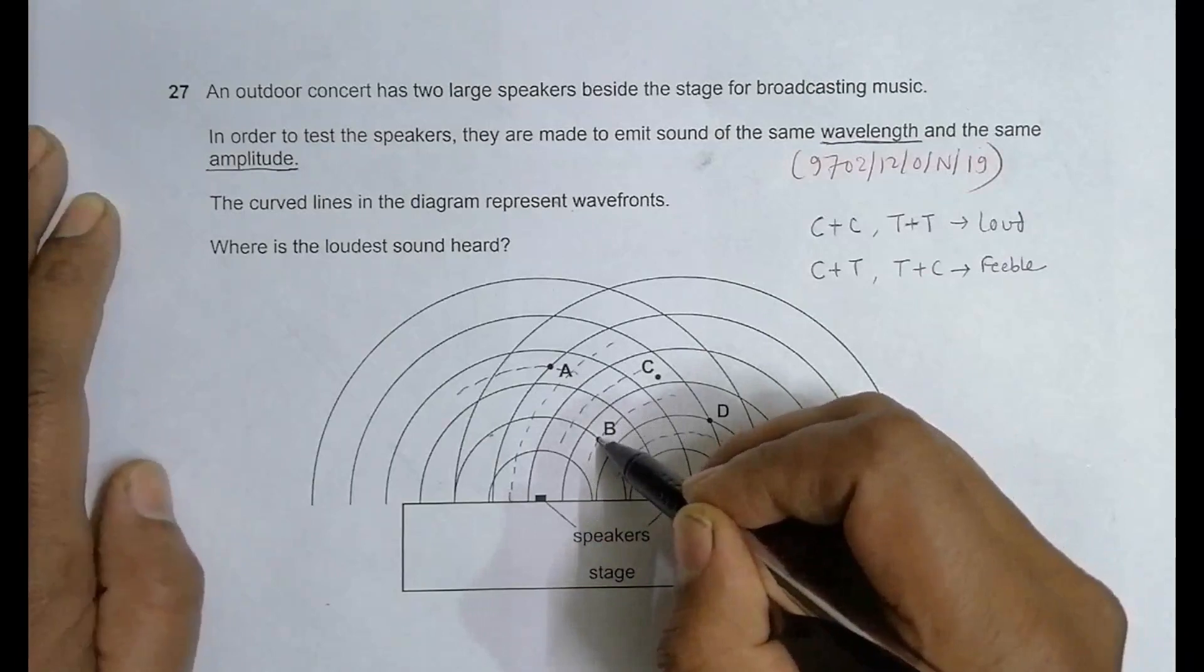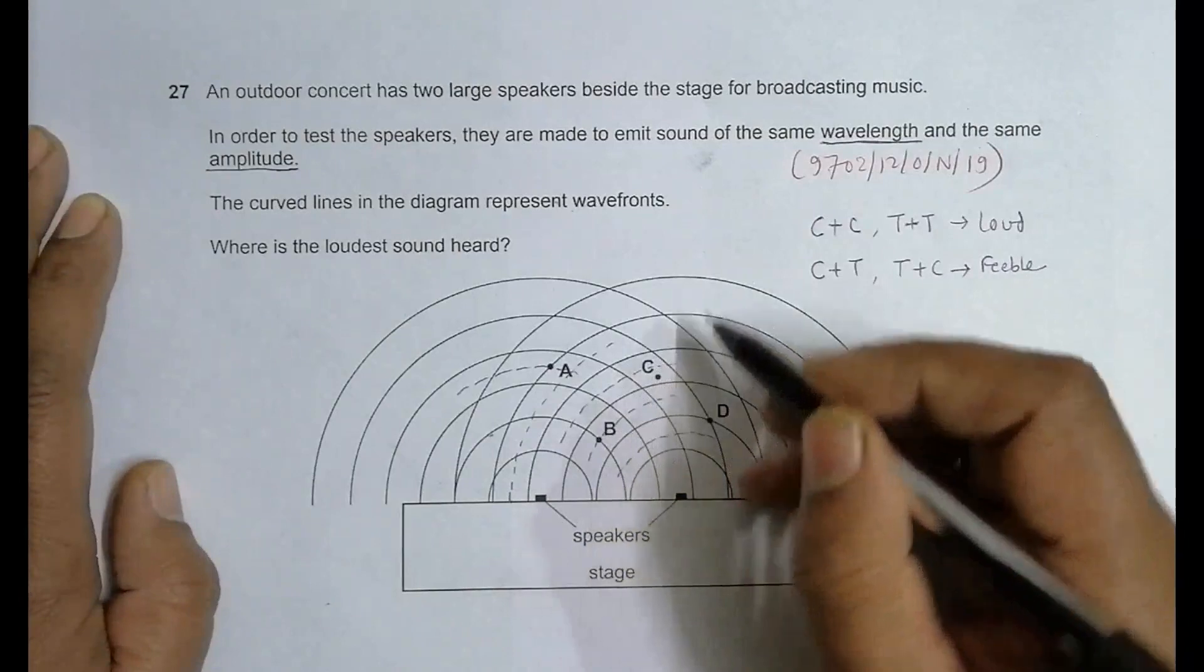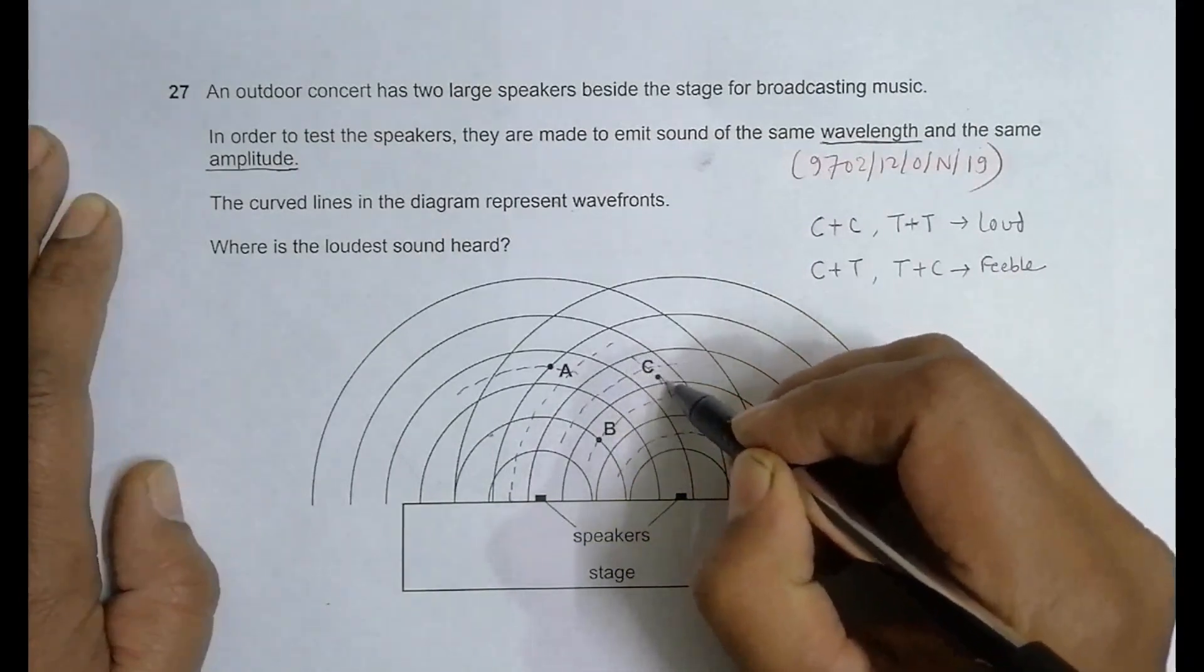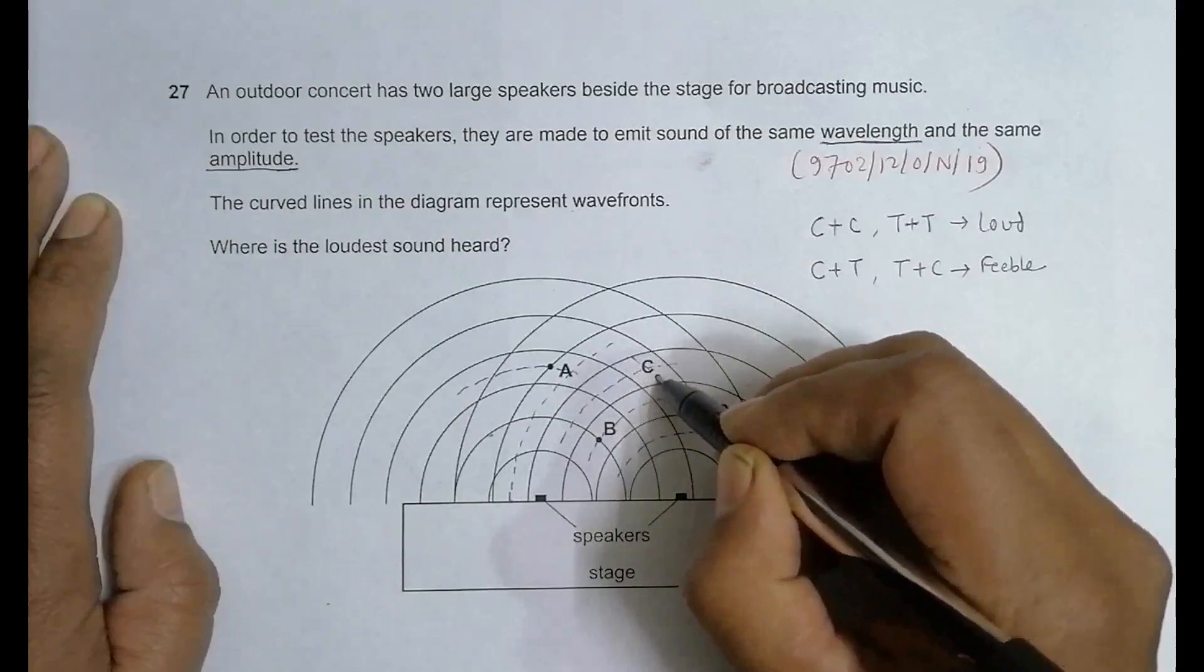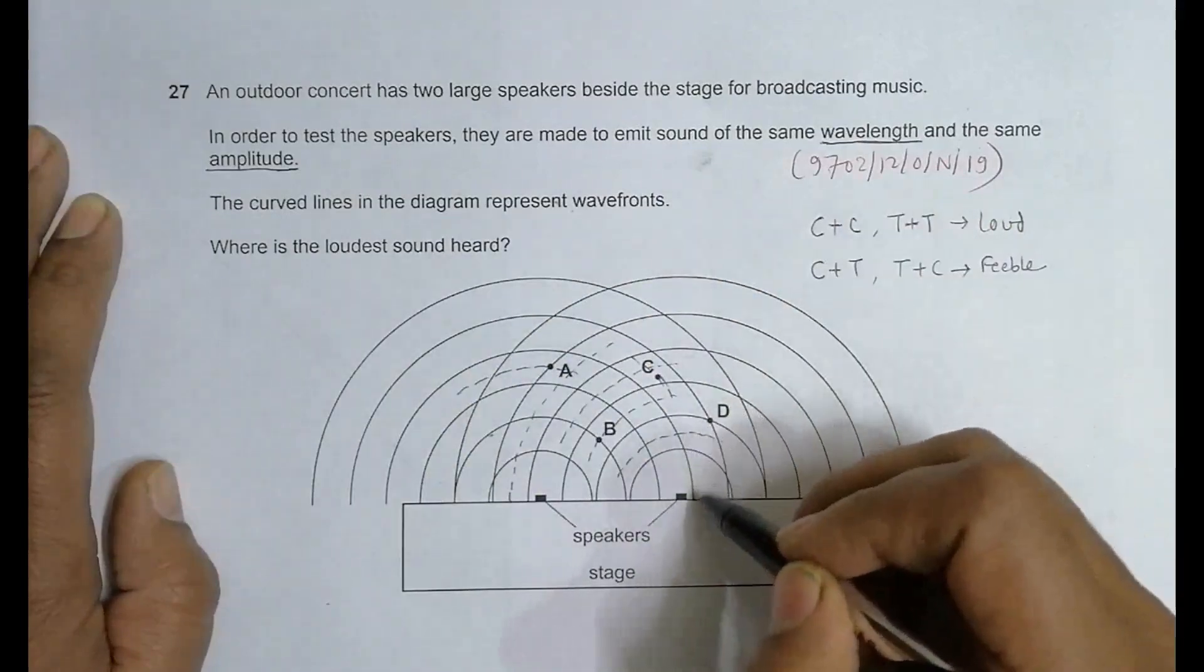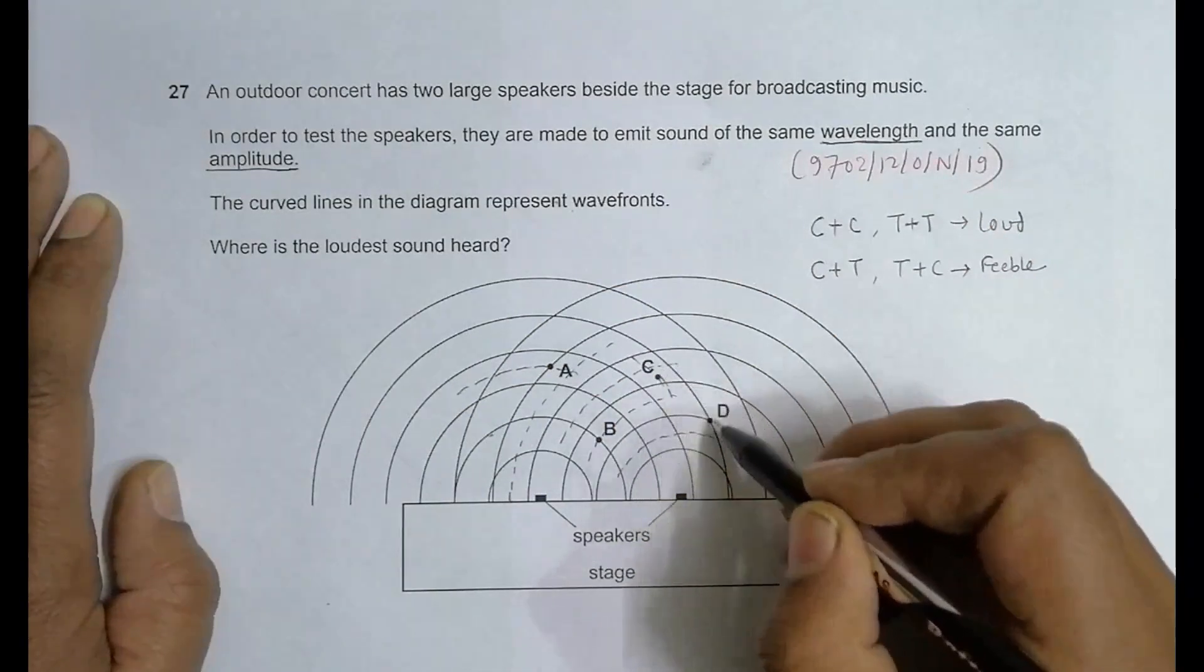If I go for C, it is somewhere in the middle, there is neither. From this side it will be trough, but from this side it will be somewhat middle. Here at D, it is a crest from this side and a crest from this side also, so two crests are overlapping here.